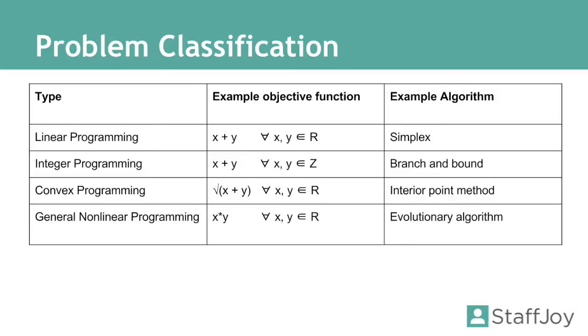In terms of problem classification, the main buckets for different types of problems in optimization are linear programming, integer programming, convex programming, and then you start to get into different types of nonlinear programming.